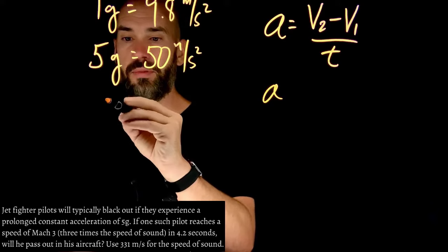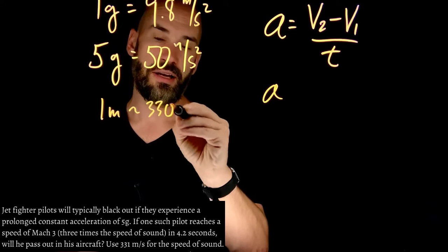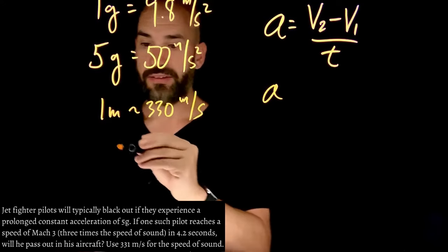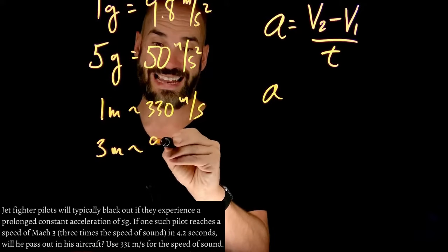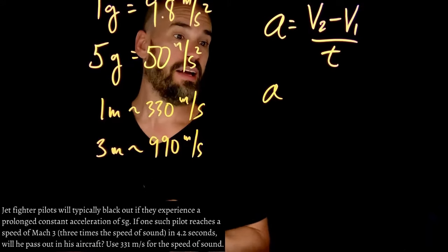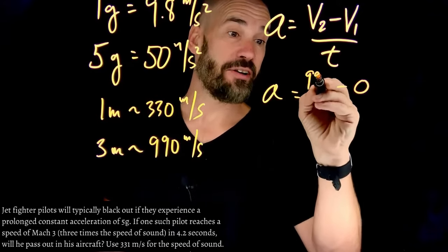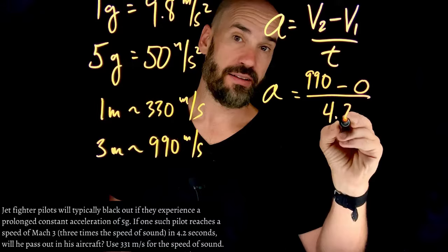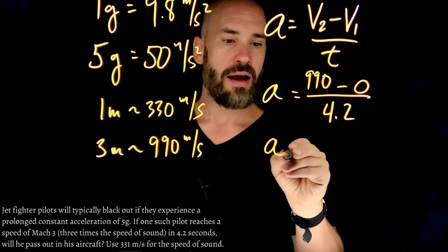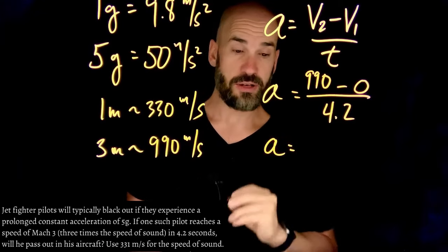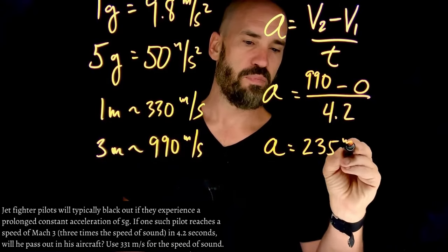Now, one Mach is the speed of sound, which is roughly 330 meters per second. And so three Machs is three times the speed of sound, which is three times that, which is just 990 meters per second. So I'm going to be going from zero meters per second to 990 meters per second in 4.2 seconds. And you guys can go ahead and race me on the calculation. According to my recollection, this is going to be about 235 meters per second squared.